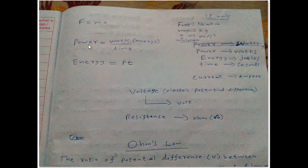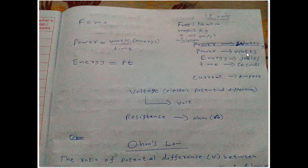Power is equal to work divided by time. We can also say energy divided by time equals power. The SI unit of power is Watts, and the SI unit of energy is Joules — these are really important to know. Time has SI unit of seconds.